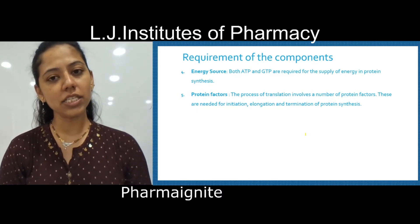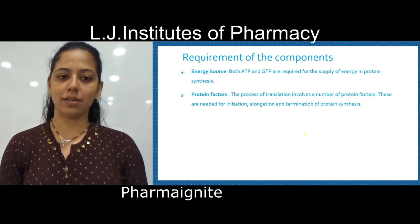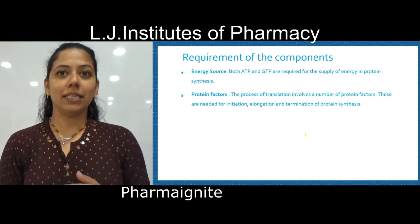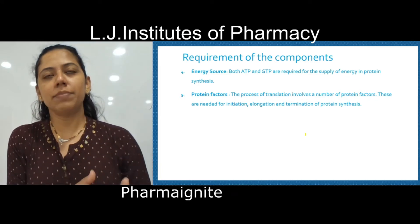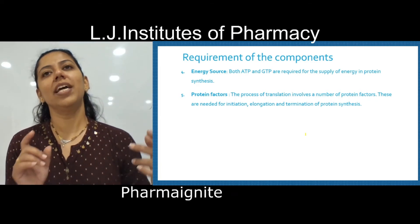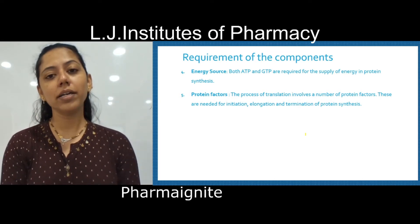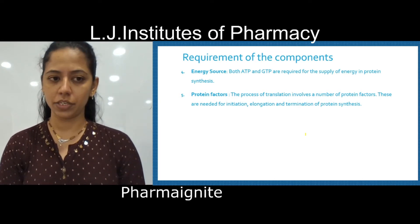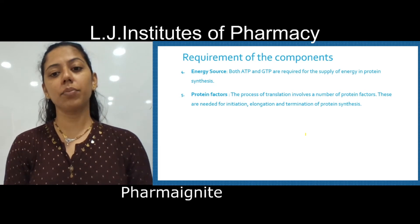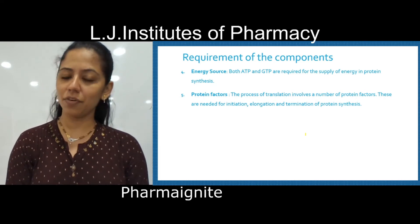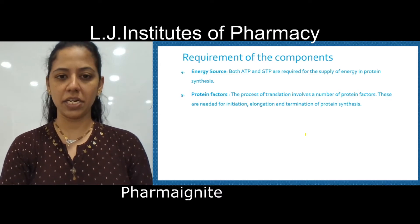For the whole translation process, energy is needed, and that energy is supplied from ATP and GTP. Same as the transcription process — in transcription we have sigma factor and rho factor for initiation, elongation, and termination — similarly, for this translation process we need protein factors for initiation, elongation, and termination.